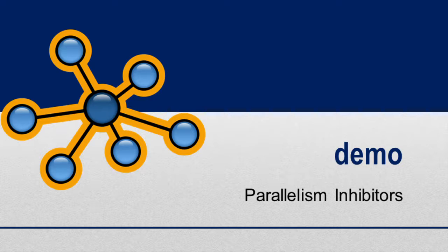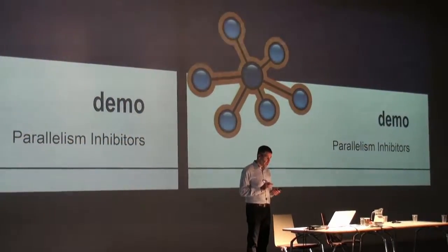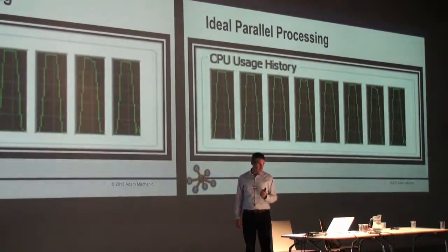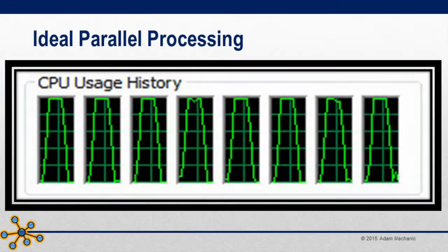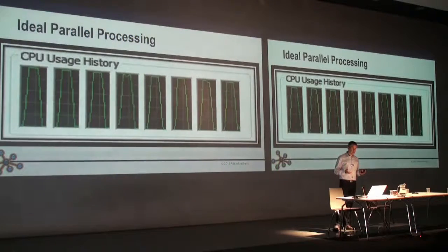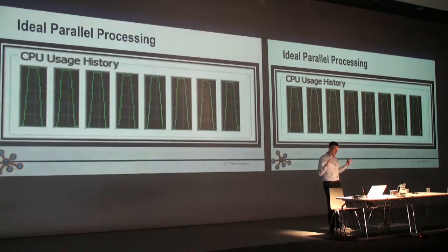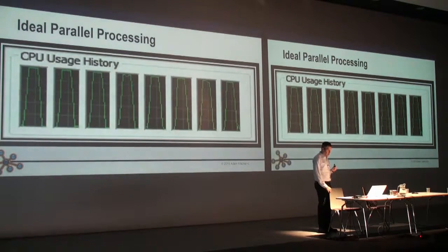We've talked about inhibitors. Once we've figured out whether we have any inhibitors, we want our parallel plan to be ideal. What is an ideal parallel plan? Ideal parallelism would look like this: where all of the threads — say our parallel plan has eight worker threads — would start at almost exactly the same time, all run with about the same amount of work, and all shut down at about the same time. That's what we want because it gives us the best possible performance, best possible resource utilization, and best possible balance across everything we're putting into our plan.